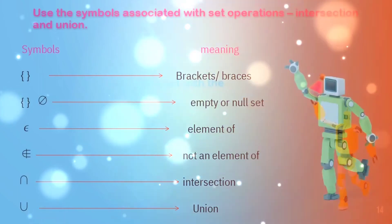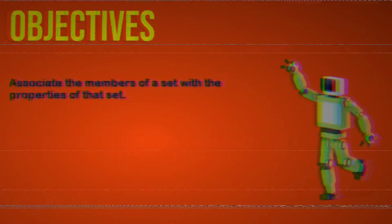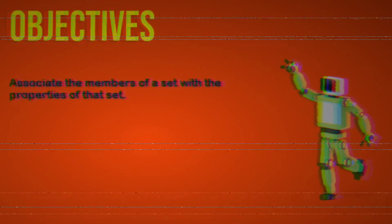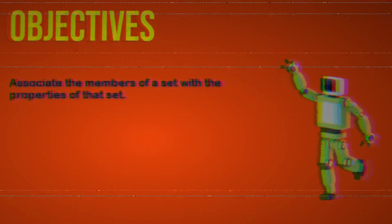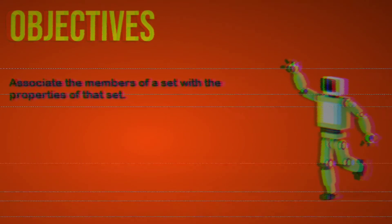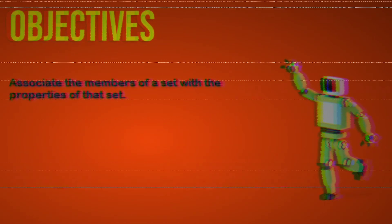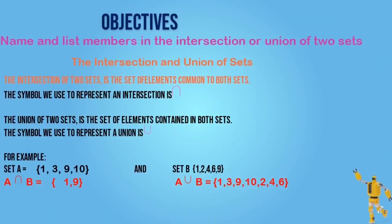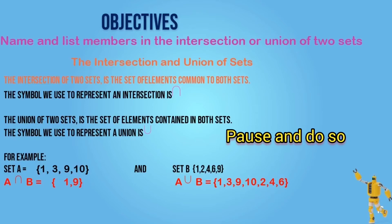Our next objective is to associate the members of a set with the properties of that set. Now we will be putting the symbols we just looked at into practice — specifically the symbol for the union and intersection, also the element-of symbol, which uses braces. Take a good look at the example and how these symbols are used.